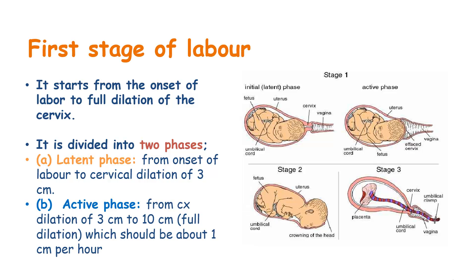The first stage of labour starts from the onset of labour to full dilation of the cervix, that is 10 cm dilation. This first stage is divided into two phases: the latent phase and the active phase. The latent phase starts from the onset of labour to cervical dilation of 3 cm. The active phase starts from 3 cm to 10 cm, which is termed full dilation, and should progress at about 1 cm per hour.